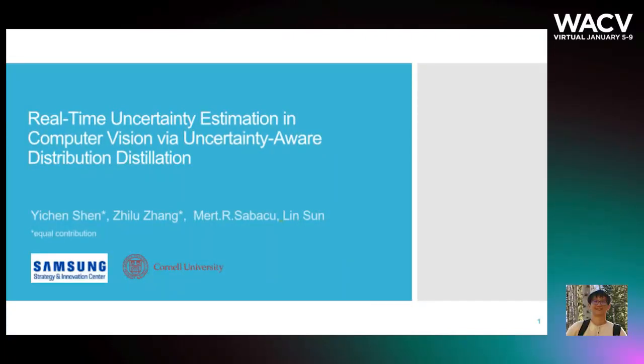We introduce real-time uncertainty estimation in computer vision via uncertainty-aware distribution distillation. This is a collaboration work between Samsung SSIC and Cornell University.